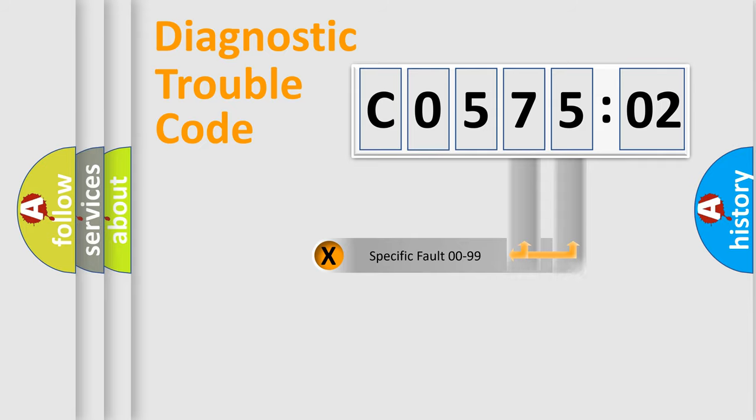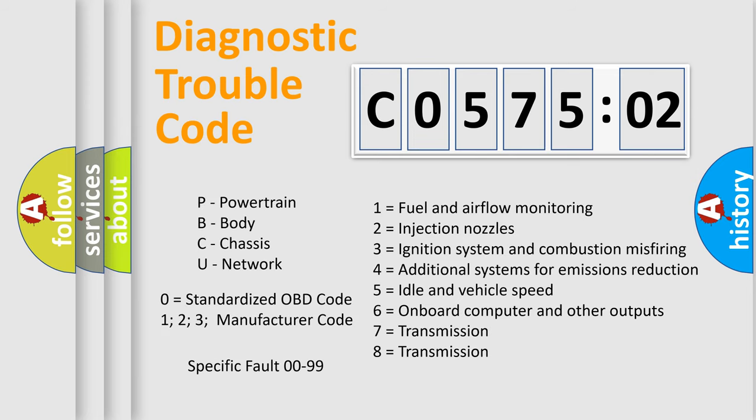Only the last two characters define the specific fault of the group. The add-on to the error code serves to specify the status in more detail, for example, a short to ground. Let's not forget that such a division is valid only if the second character code is expressed by the number zero.